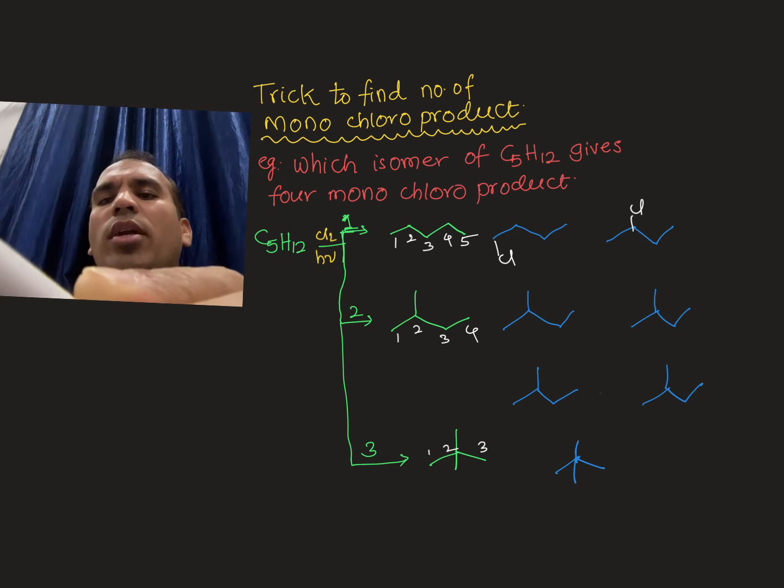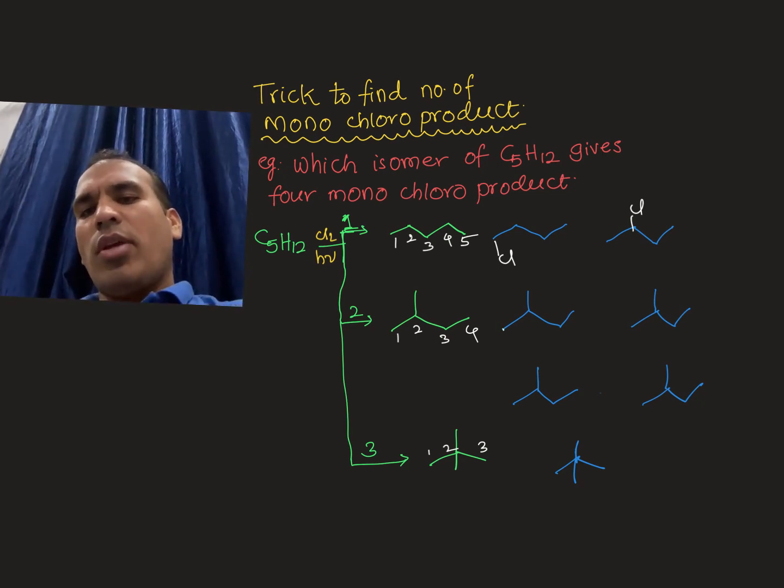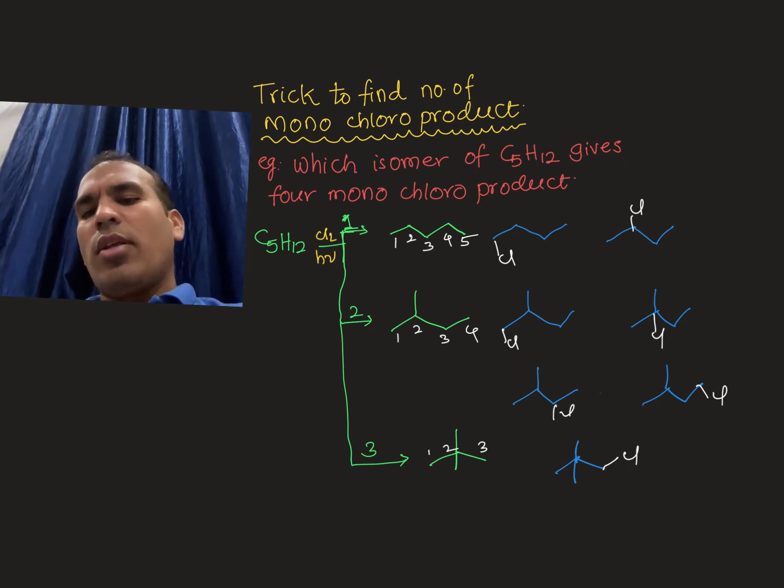If the compounds give the same name, then don't write them separately. Write only those which give different names, as those are the different isomers. Now here one, then here two, and here three. Next here four. And this constitutional isomer gives only one monochloro product. Therefore, the answer is this one.